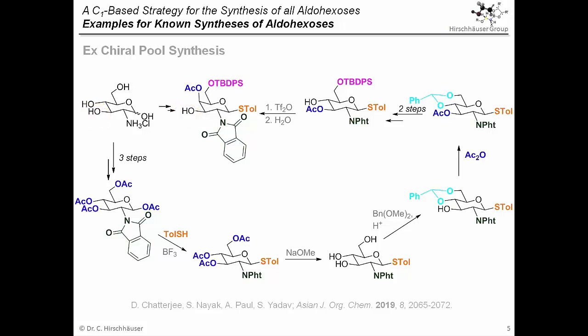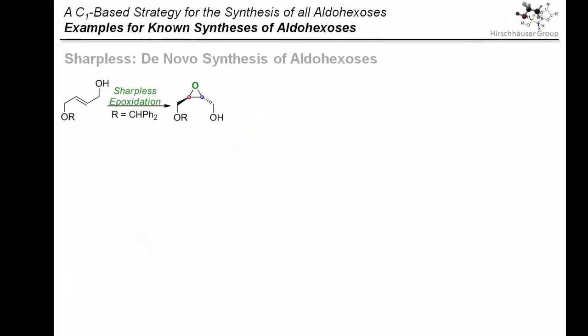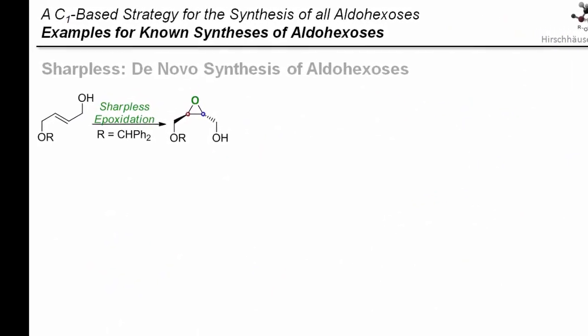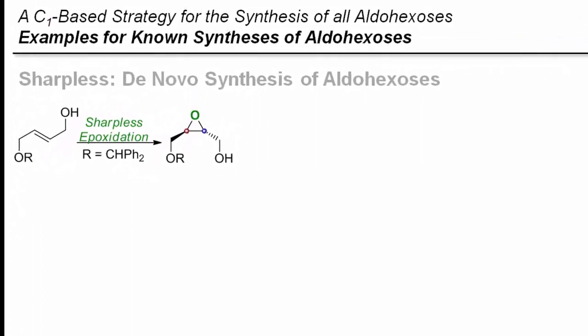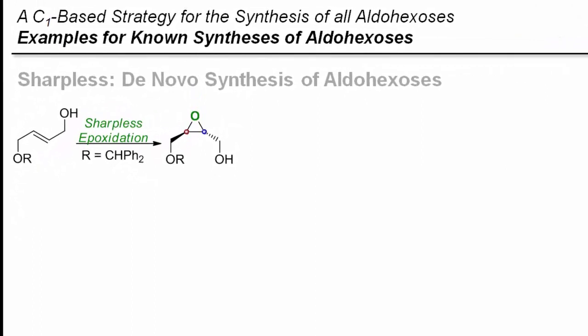So is there a somewhat more general approach? Some strategies rely on total synthesis. Let me show you just one of the classics here, as it will become important later in the video. Sharpless and co-workers have developed a synthesis of aldohexoses based on the famous Sharpless epoxidation. For that they start with a monoprotected diol, upon which they perform the epoxidation reaction.